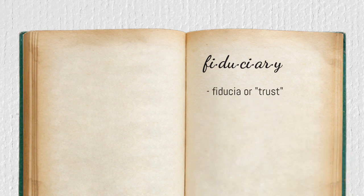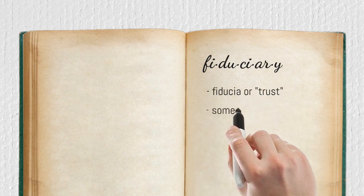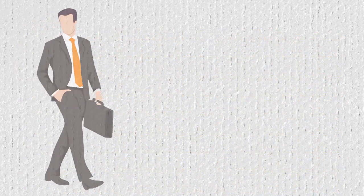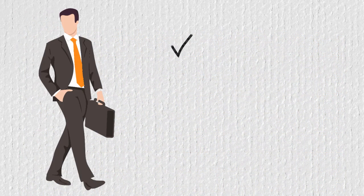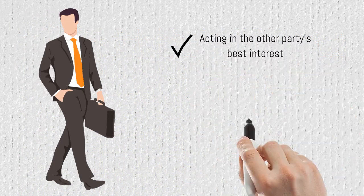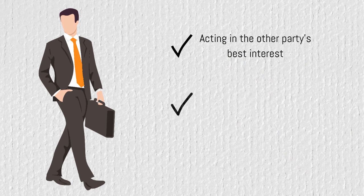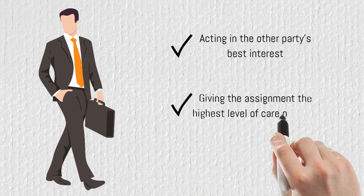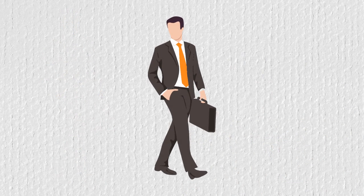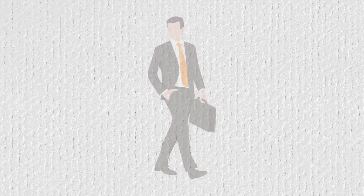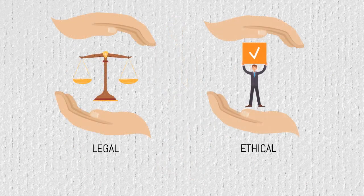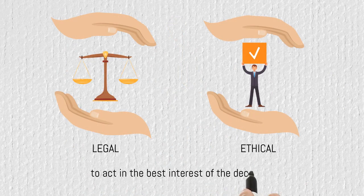So, a fiduciary is someone in a position of trust. Fiduciary responsibility means acting in the other party's best interest, giving the assignment the highest level of care possible. A fiduciary for a probate bond has a legal and ethical responsibility to act in the best interest of the decedent.